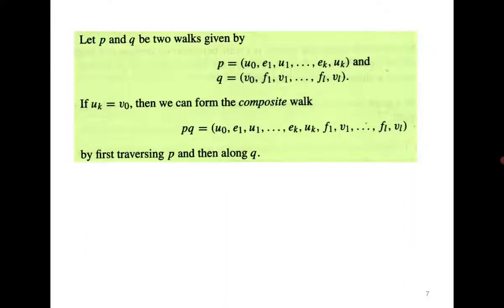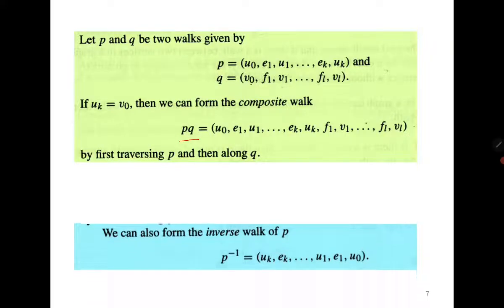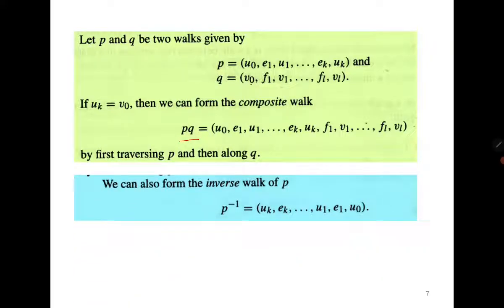If we have two walks, we can talk of their composite walk. If p goes from u0 to uk, and uk is the same as v0, then the composite walk pq can always be written. Similarly, we can talk of the inverse of a walk.